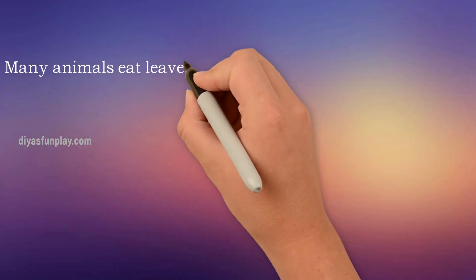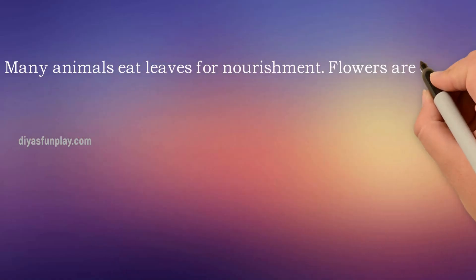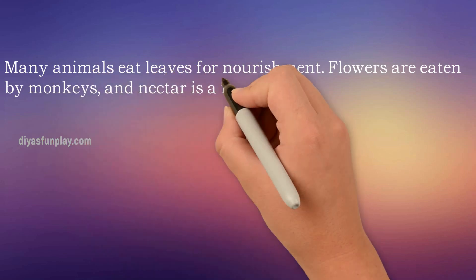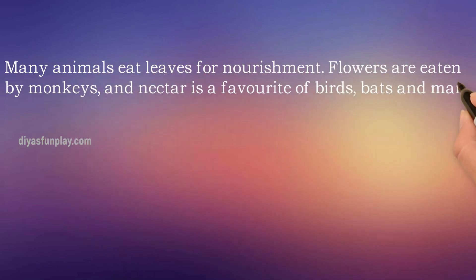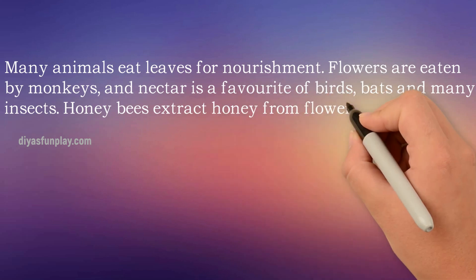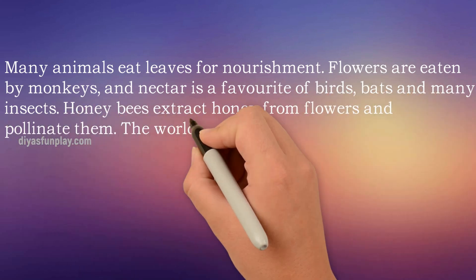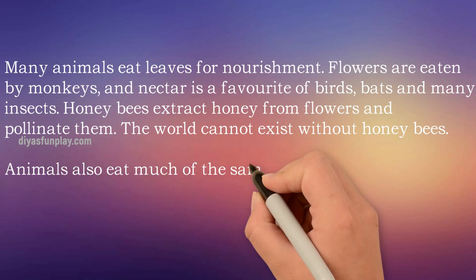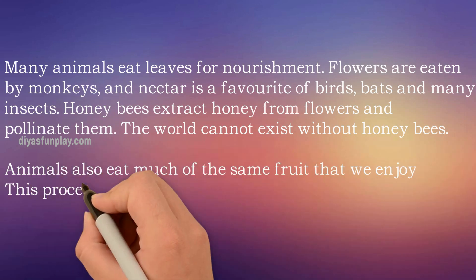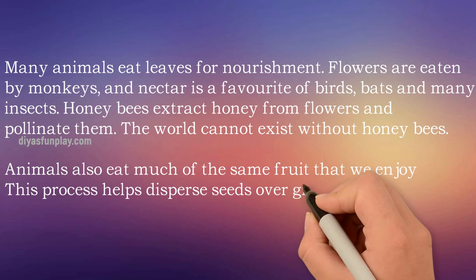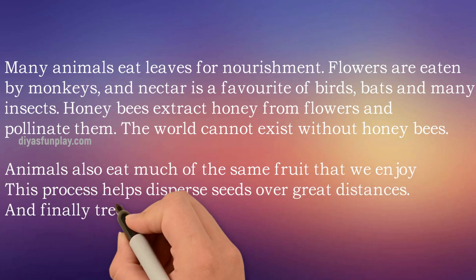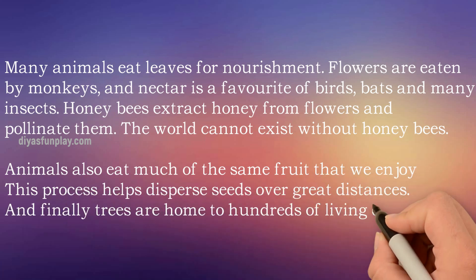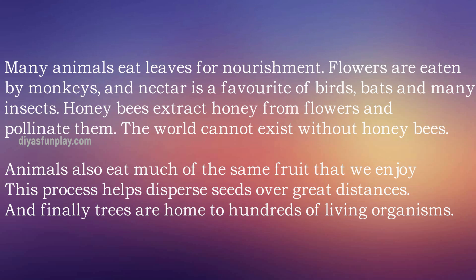Fallen leaves make excellent compost that enriches soil. Many animals eat leaves for nourishment. Flowers are eaten by monkeys and nectar is a favorite of birds, bats and many insects. Honey bees extract honey from flowers and pollinate them. The world cannot exist without honey bees. Animals also eat much of the same fruit that we enjoy. This process helps disperse seeds over great distances, and trees are the home to hundreds of living organisms.